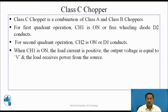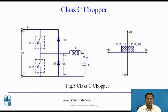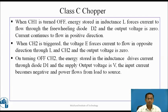When chopper switch 1 is on, the load current is positive, output voltage is equal to V, and the load receives power from the source. The current flows from source Vs through chopper switch 1, L, and E, back to Vs. Assume the direction of voltage is positive and the direction of current is positive — the chopper operates in the first quadrant. When chopper switch 1 turns off, freewheeling action takes place; current flows through D2 and the load, load voltage is zero, and load current is still positive. When chopper switch 2 is triggered, voltage E forces current to flow in the opposite direction through L and chopper switch 2, and output voltage is zero.